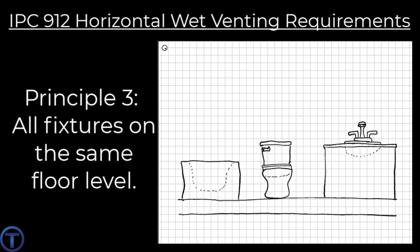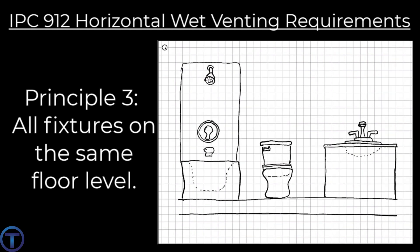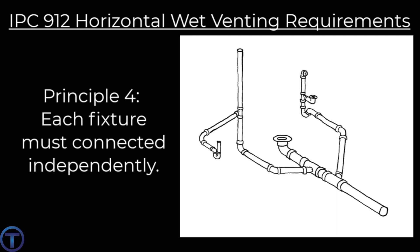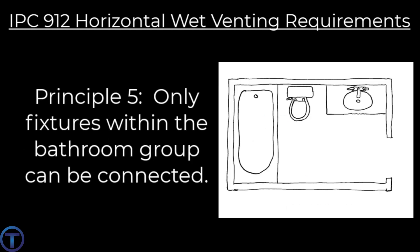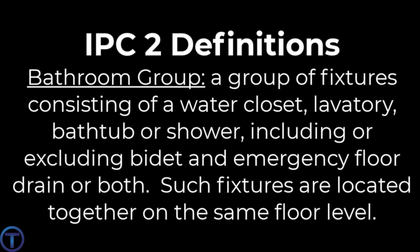Horizontal wet vent principle three: all fixtures connected to the wet vent must be on the same floor level — same as with the vertical wet vent. Horizontal wet vent principle four: each fixture must connect independently to the wet vent. Horizontal wet vent principle five: only fixtures within the bathroom group are allowed to be connected to the wet vent.